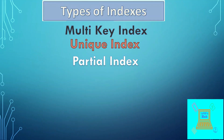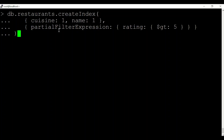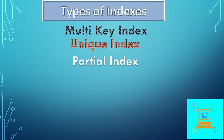A partial index is a type of index where we set the index only for a particular subset of documents rather than for the whole collection. If I want to create a partial index on a restaurants collection, I set the index only for documents whose rating is greater than 5. From version 3.2 of MongoDB, partial index is available as a superset of sparse index, which is another type of index.